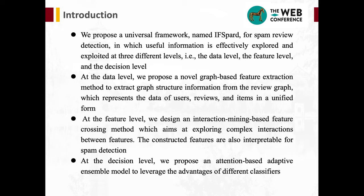At the data level, we propose a novel graph-based feature extraction method to extract graph structure information from the review graph, which represents the data of users, reviews, and items in a unified form. At the feature level, we design an interaction mining-based feature crossing method, which aims at exploring complex interactions between features. The constructed features are also interpretable for spam detection.